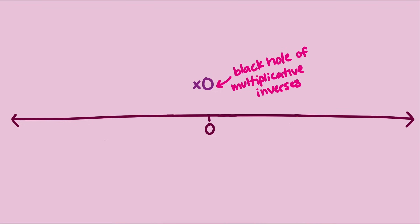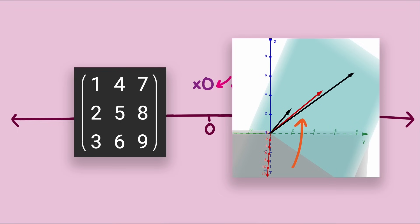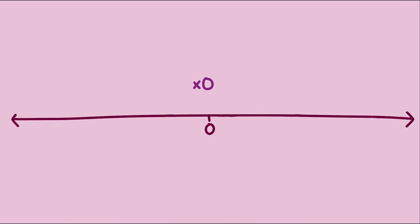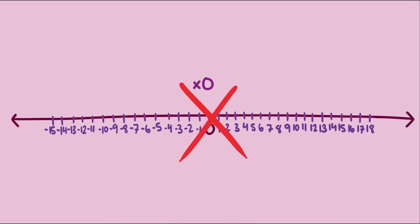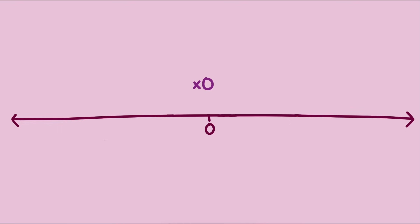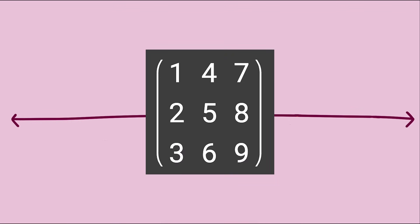The same idea applies to matrices. Some non-zero matrices collapse space, flattening lines, planes, or hyperplanes into lower dimensional spaces. Once that collapse happens, you can't recover the original input, with infinitely many points being forced to the same point. And that's why not all non-zero matrices have inverses.